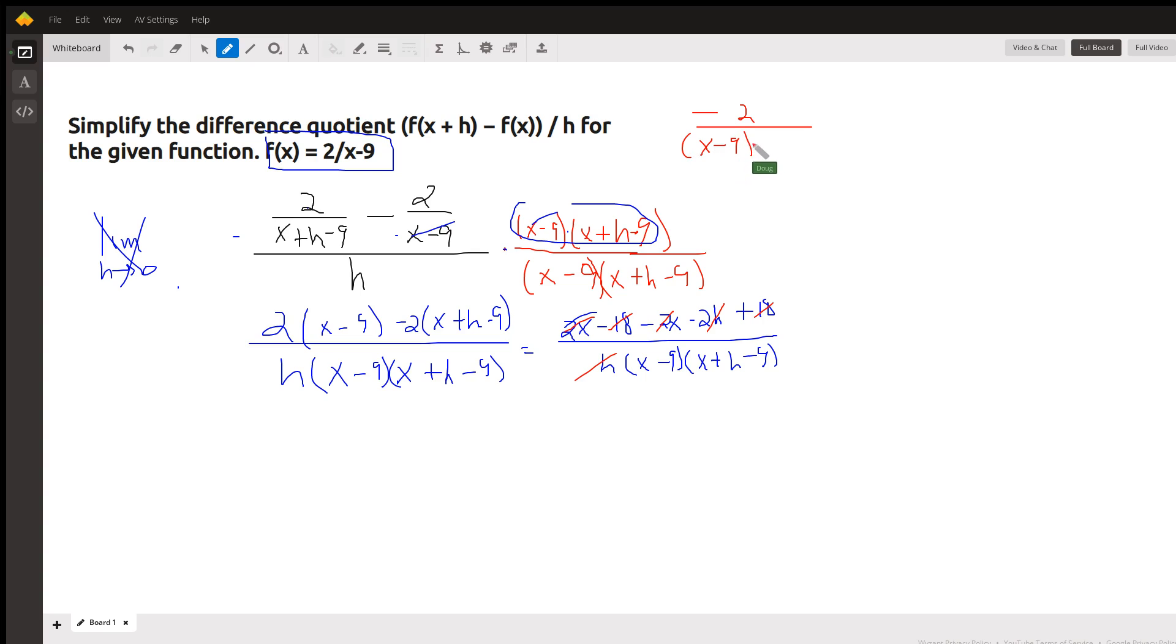And when we tack on the idea of taking the limit of that as h approaches 0, this h becomes a 0 and we end up with minus 2 over x minus 9 quantity squared.